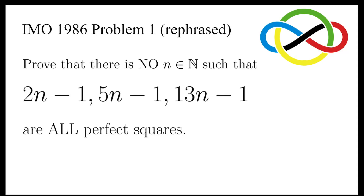In this video, we're going to take a look at the problem rephrased from Problem 1 in IMO 1986. It's to show that we cannot find any natural number n such that 2n-1, 5n-1, and 13n-1 are all perfect squares at the same time.